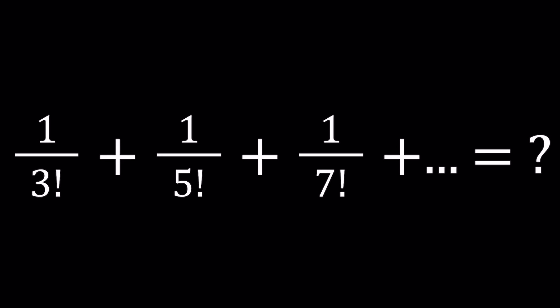Hello everyone. In this video, we're going to be finding an infinite sum with reciprocals of factorials of odd numbers. So we have 1 over 3 factorial plus 1 over 5 factorial plus 1 over 7 factorial, and so on and so forth, where we add the reciprocals of odd factorials.